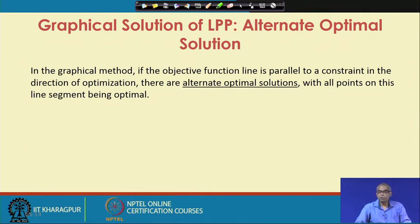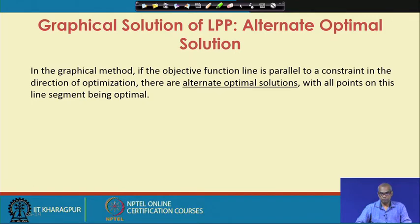Let us now discuss alternate optimal solutions. In the graphical method, if the objective function is parallel to a constraint in the direction of optimization, there are alternate optimal solutions — all points on that line segment are optimal. Alternate optimal solutions arise when the objective function line is parallel to any constraint in the direction of optimization.